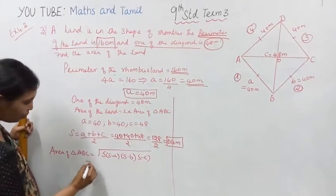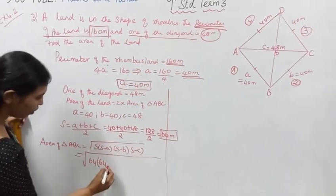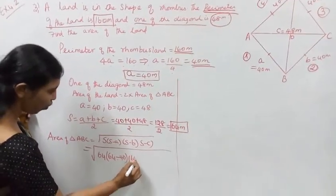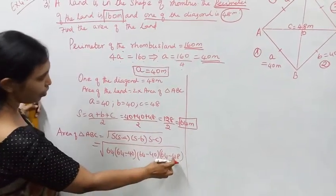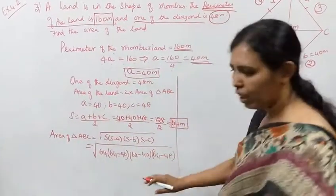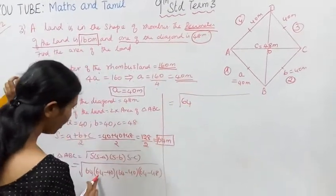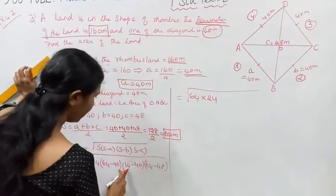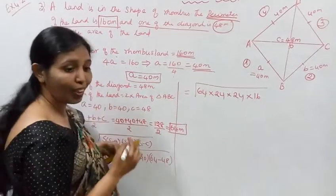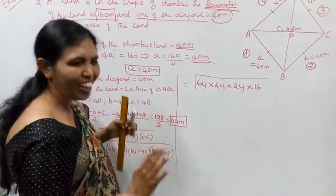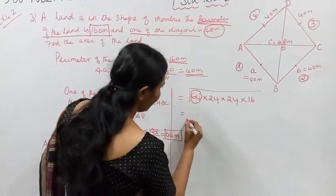Substituting into the formula: root of 64 times 64 minus 40 times 64 minus 40 times 64 minus 48. That gives us 64 times 24 times 24 times 16. Using prime factorization: 64 is 8 squared, 24 is 24 squared...